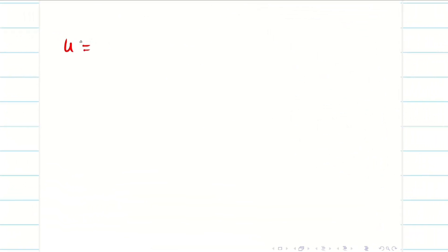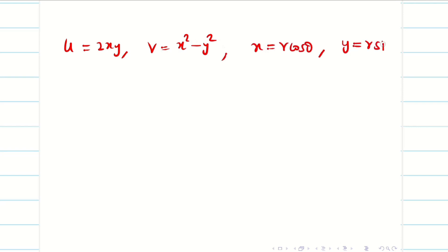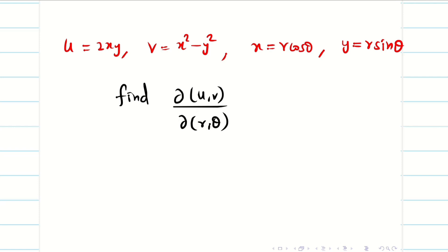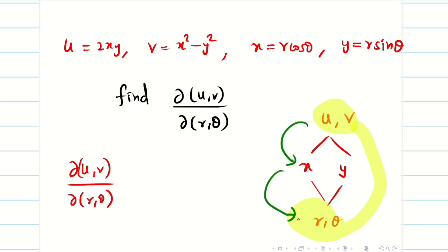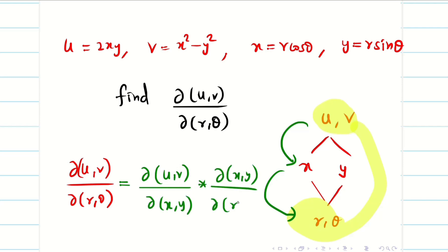Next we solve a different problem. Given u = 2xy, v = x² − y², x = r cosθ, y = r sinθ — find ∂(u,v)/∂(r,θ). Here u and v are functions of x and y, and x and y are functions of r and θ. By the chain rule: ∂(u,v)/∂(r,θ) = ∂(u,v)/∂(x,y) · ∂(x,y)/∂(r,θ). We compute each Jacobian separately.